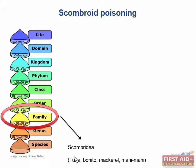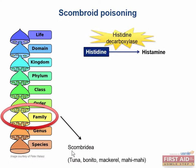It may be helpful to understand the mechanism of scombroid poisoning, since this can give clues to the presenting symptoms. If these dark-meated fish are improperly stored, bacteria can grow, and some of that bacteria may produce the enzyme histidine decarboxylase, which converts the amino acid histidine into histamine. The cofactor required for this reaction is vitamin B6.